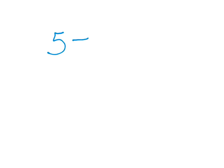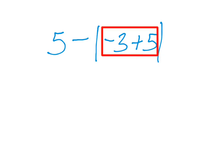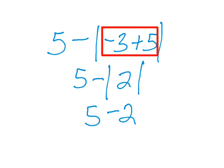For example, 5 minus the absolute value of negative 3 plus 5. The absolute value of negative 3 plus 5 is 2 — we do that entire grouping symbol first, evaluating negative 3 plus 5 before removing the absolute value bars. So we get 5 minus the absolute value of 2. The absolute value of 2 is 2, because 2 is 2 units away from zero. Then 5 minus 2 equals 3.